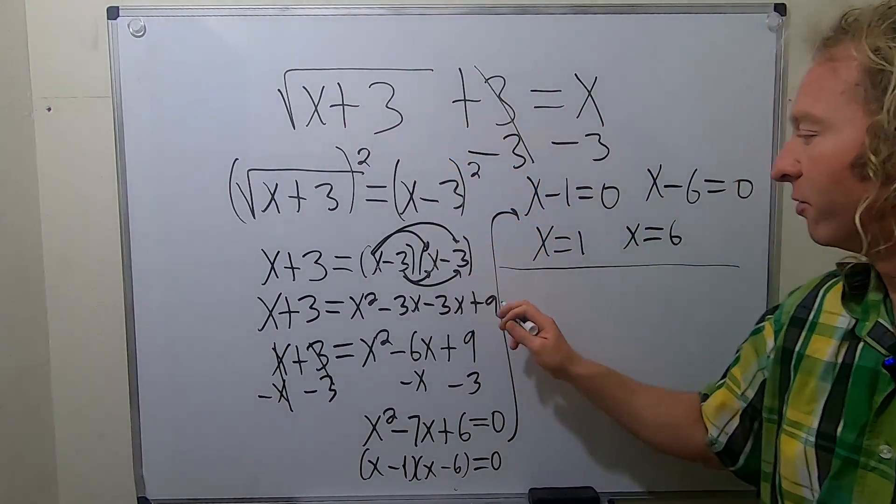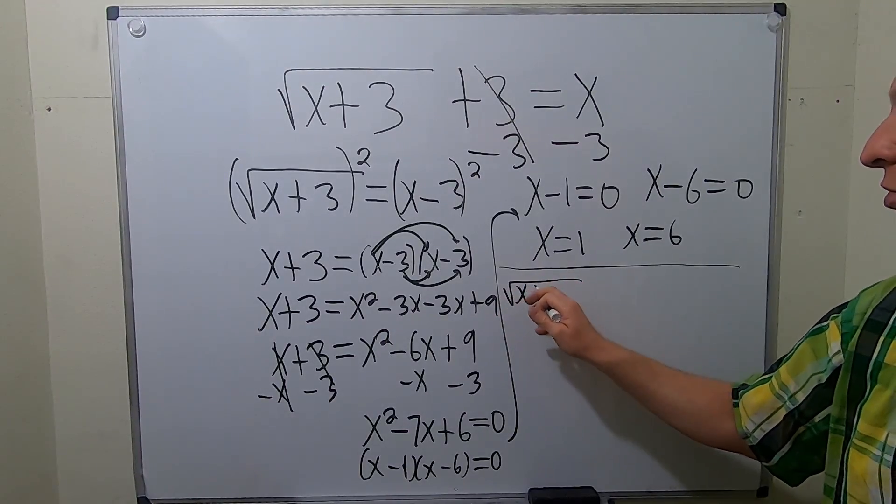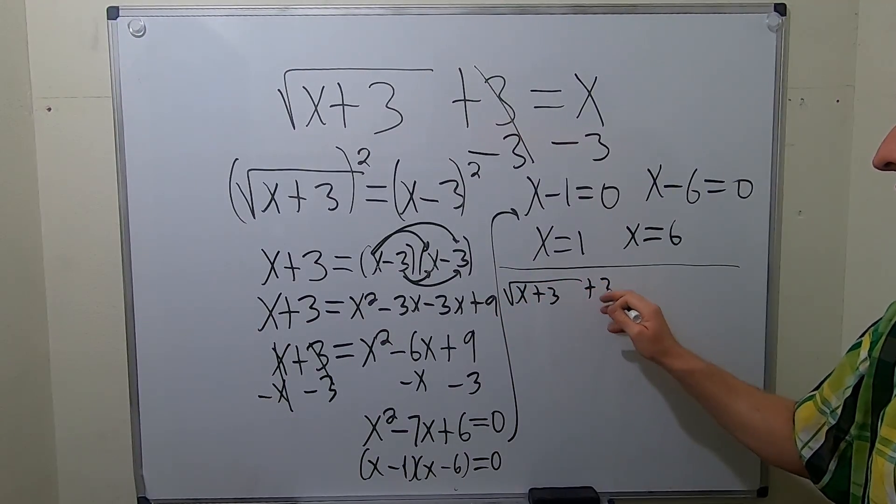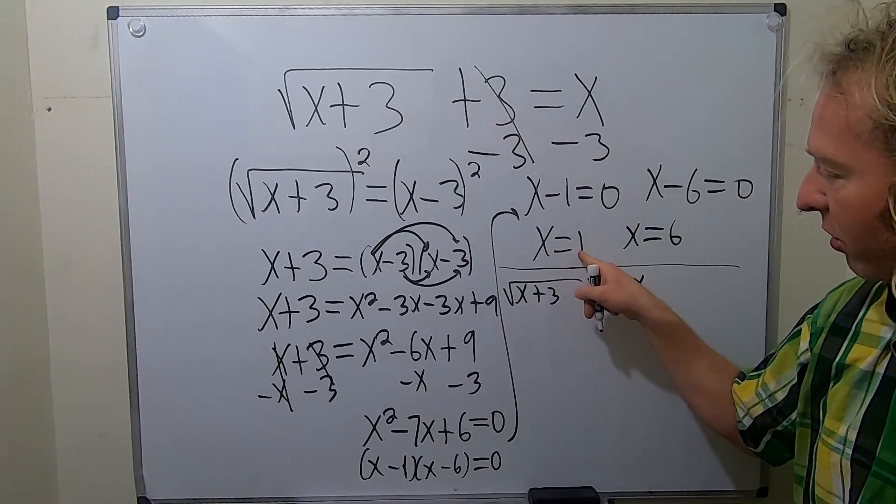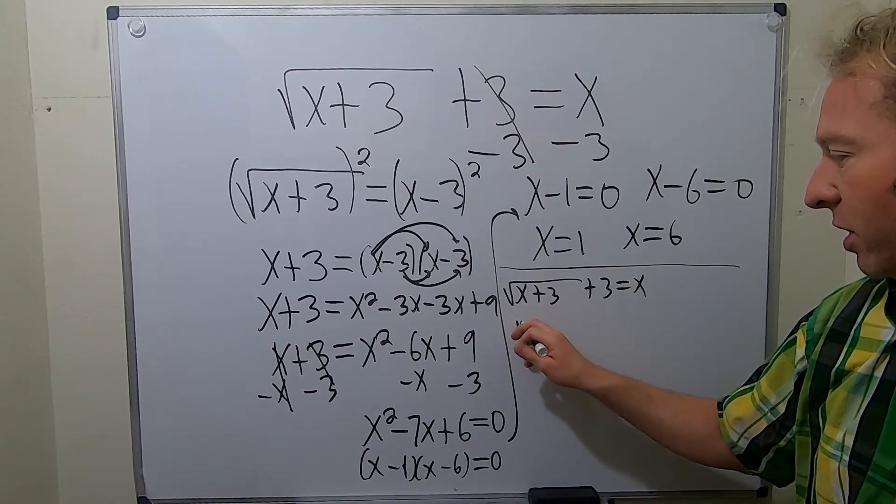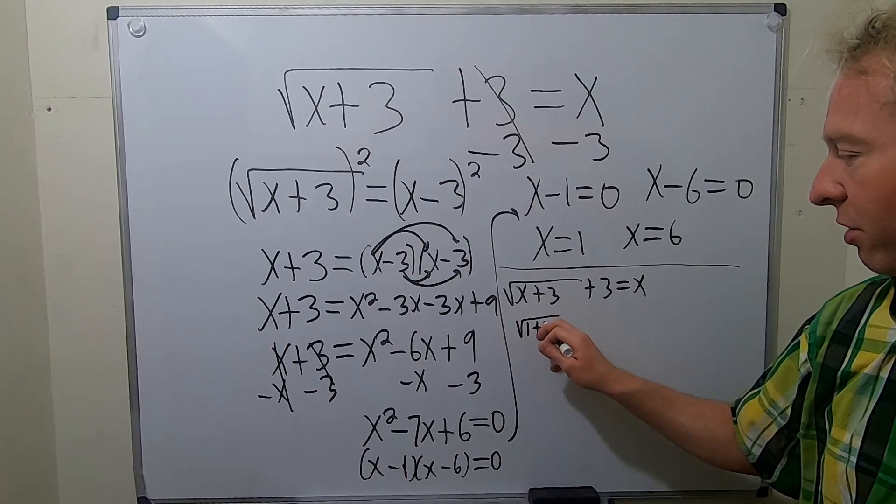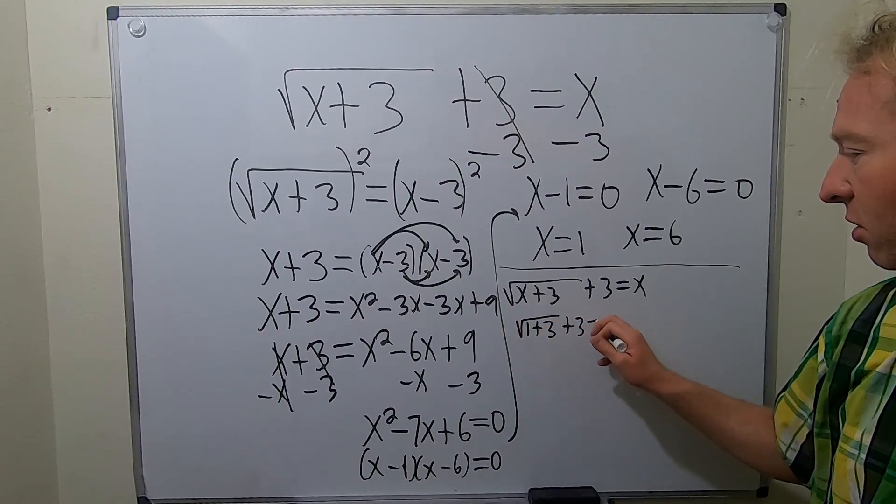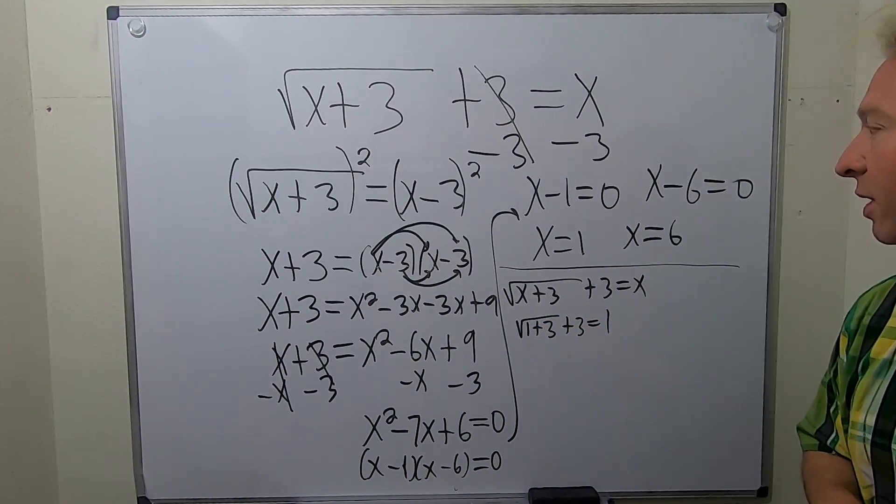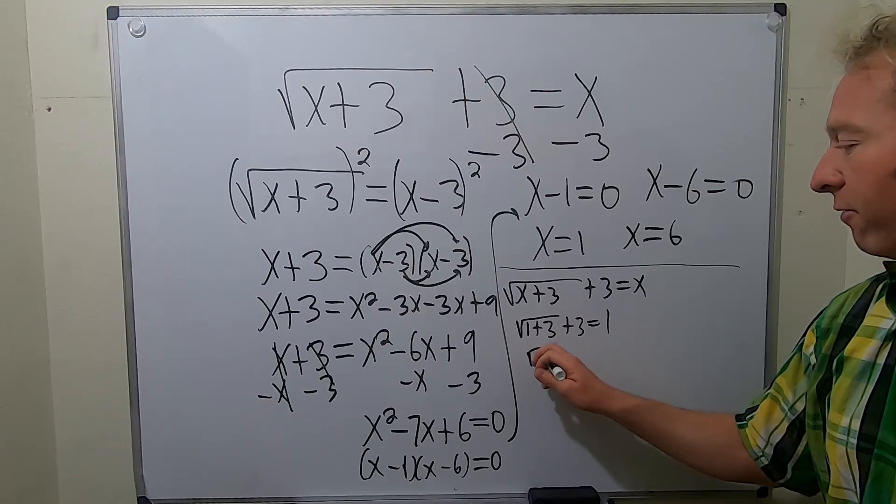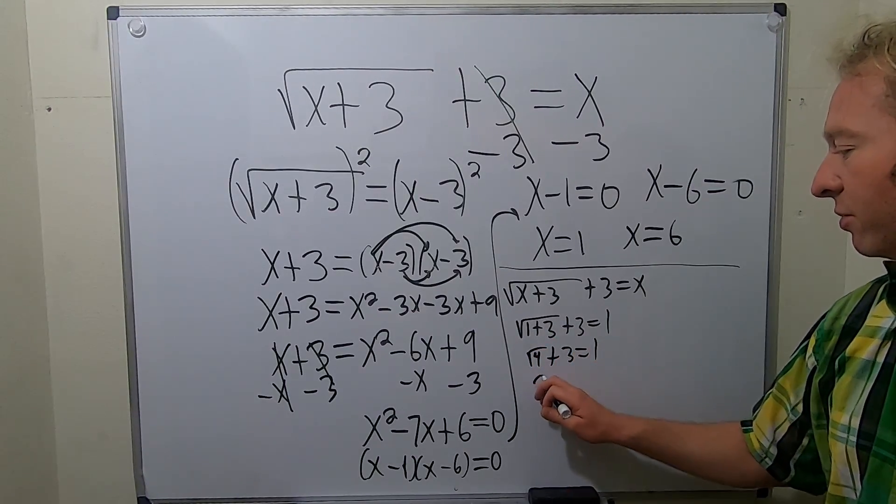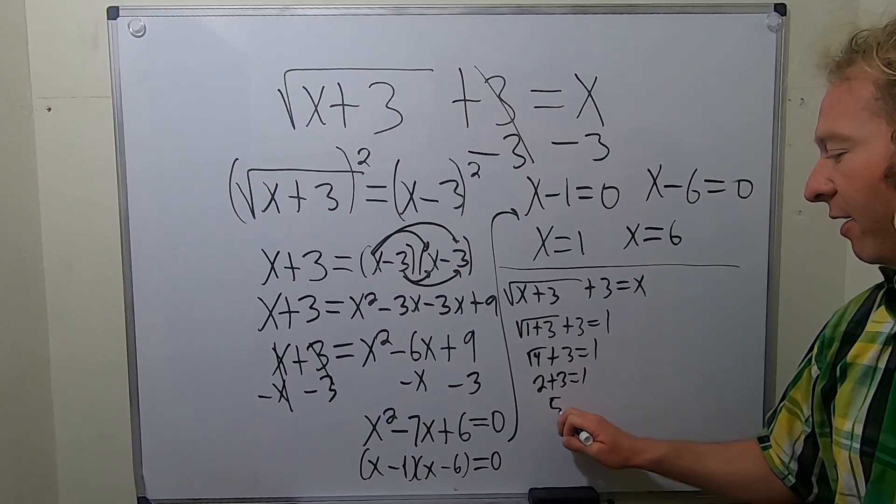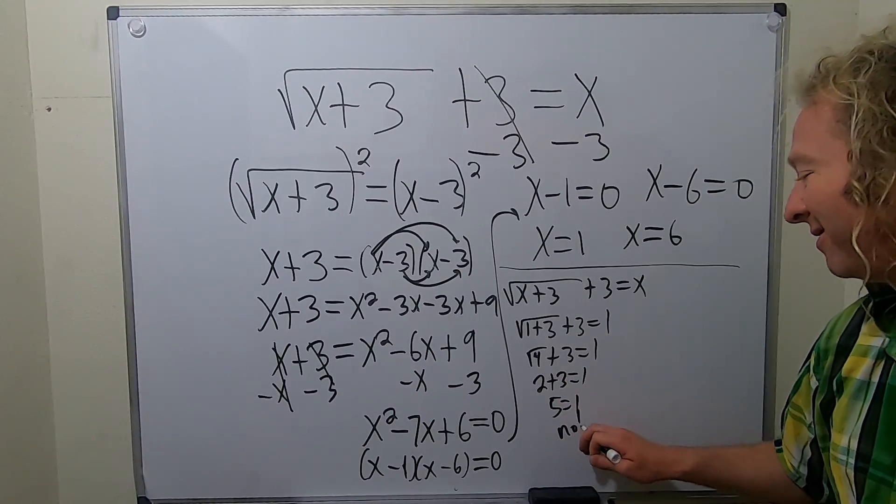So let's go ahead and check. I'm gonna write the equation down again: square root of x plus 3 plus 3 equals x. Let's check 1. If we check 1, we take the 1 and put it where the x is, so we get square root of 1 plus 3 plus 3 equals 1. That's going to be square root of 4 plus 3 equals 1, so 2 plus 3 equals 1, so 5 equals 1. Game over, it does not work.